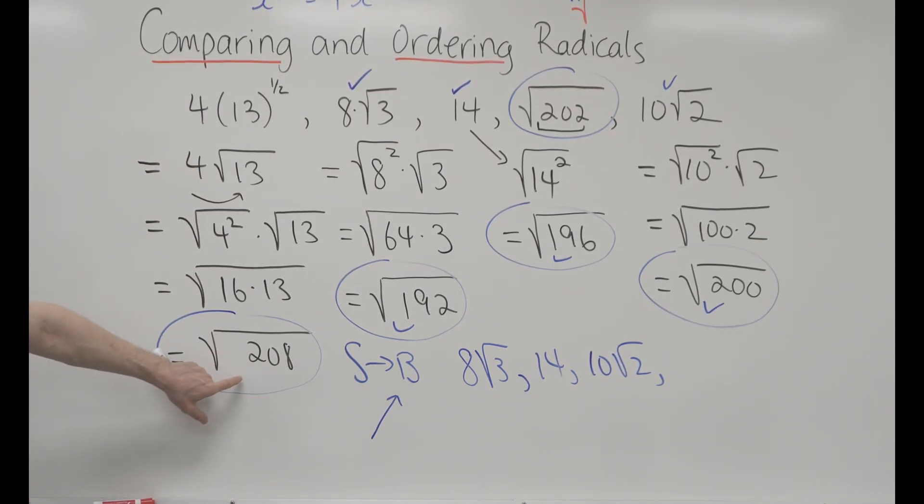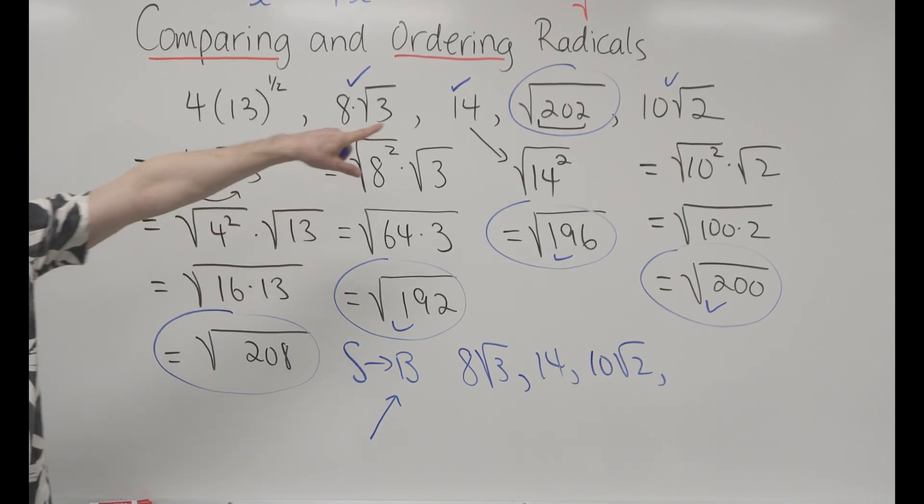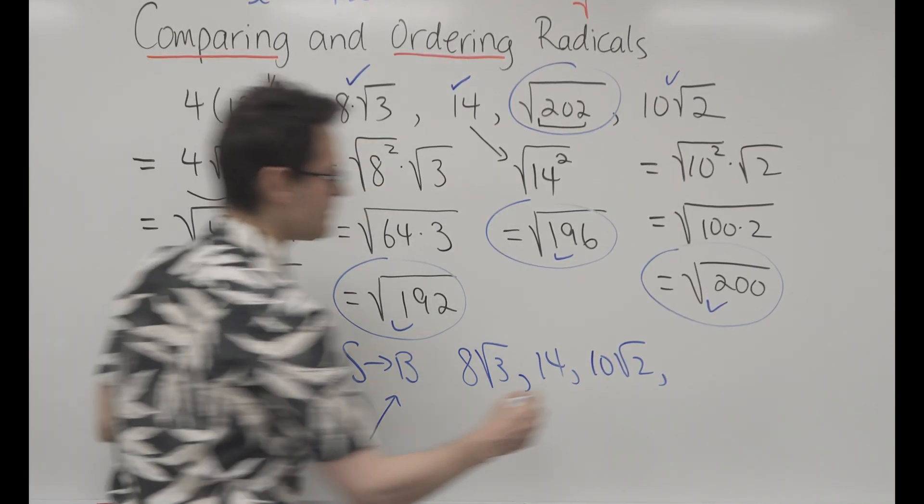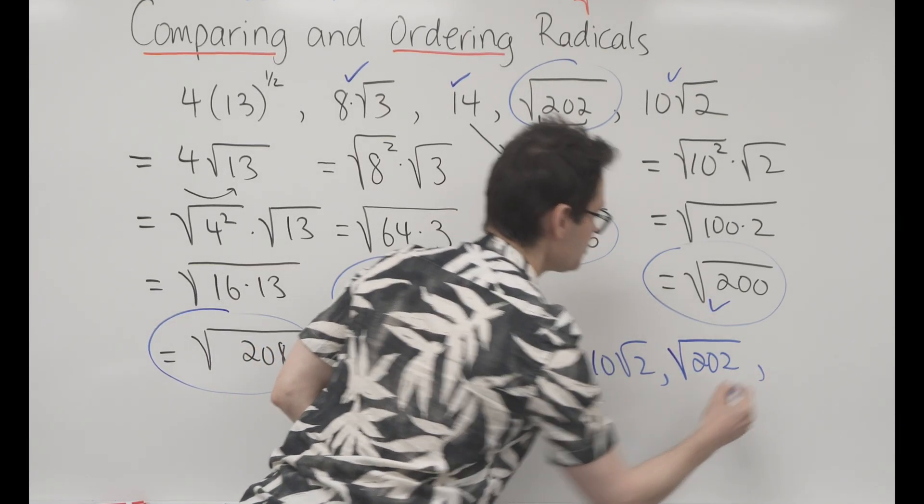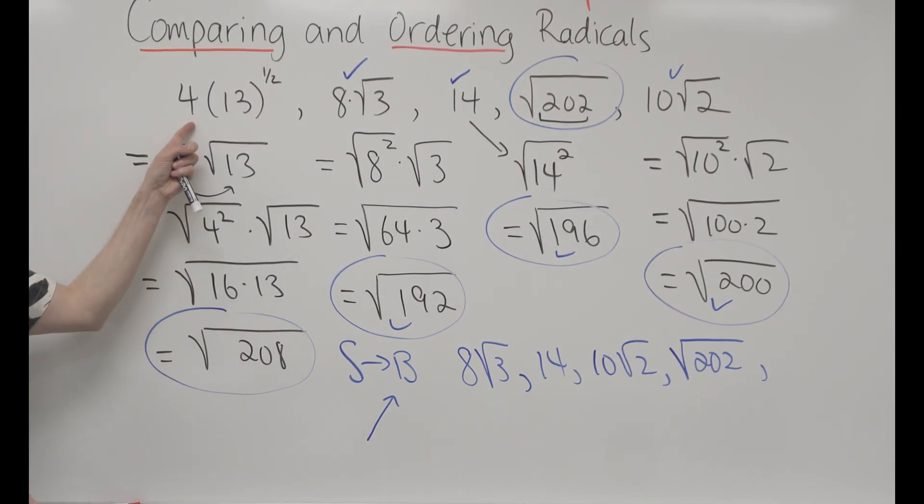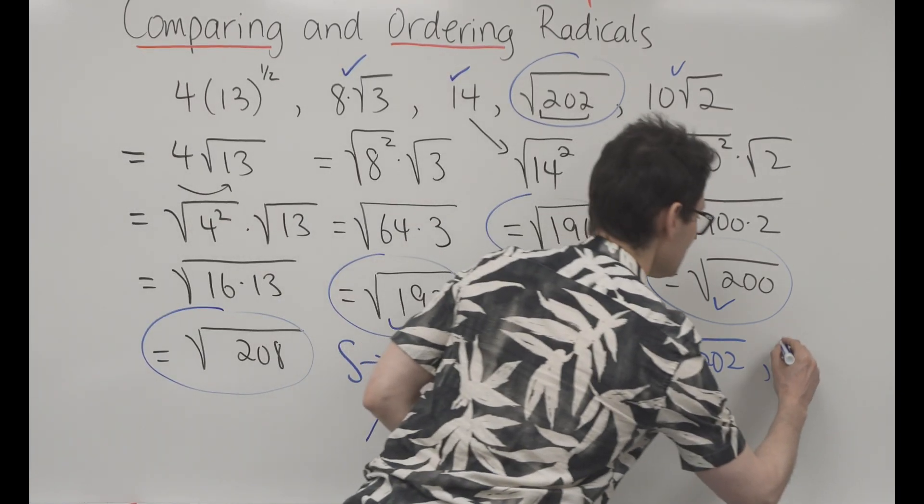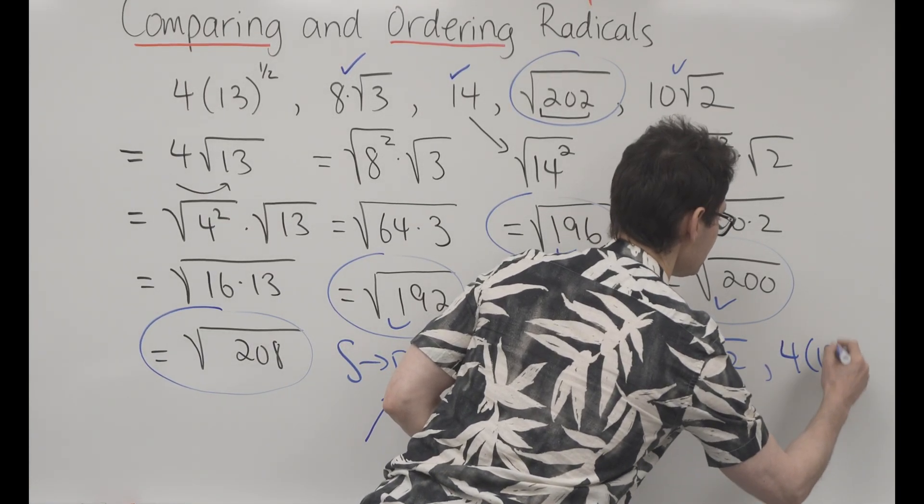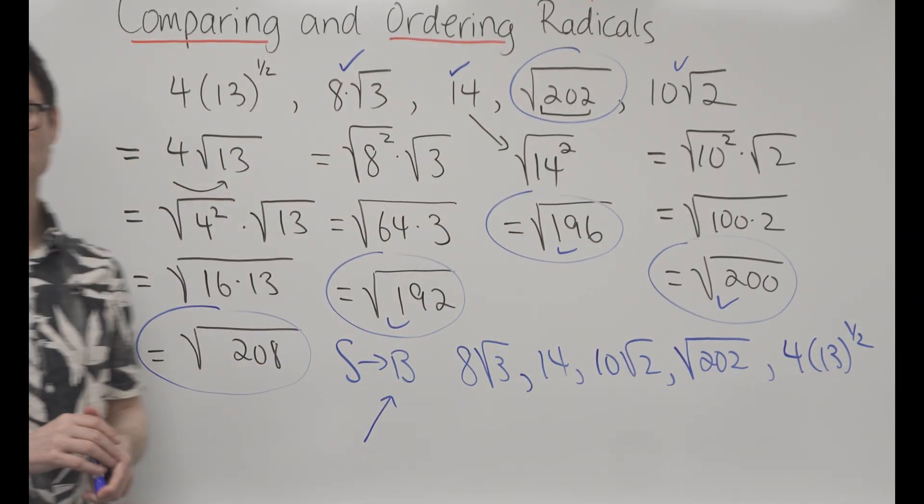Now the only numbers I have left are the 208 and the 202. The 202 was given to me as an entire radical, so I just write it as root 202. And then the final number here is root 208, which in the original form was 4 times 13 to the half, or 4 times 13 to the 1 over 2.